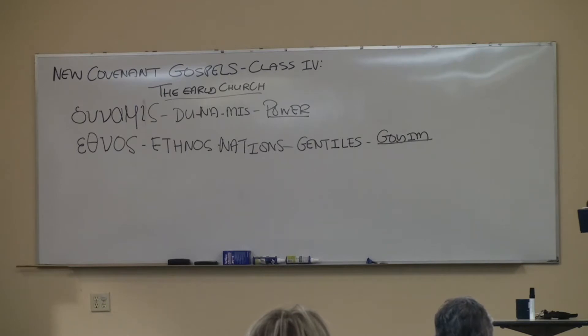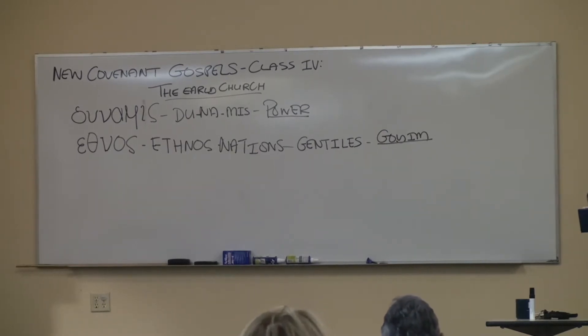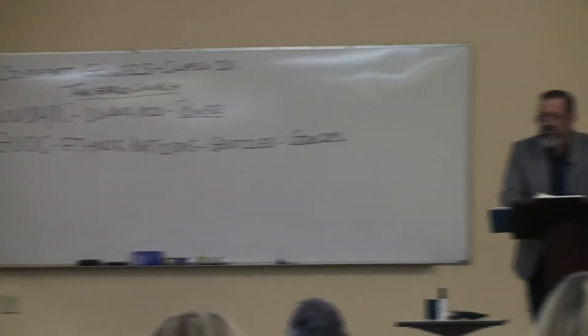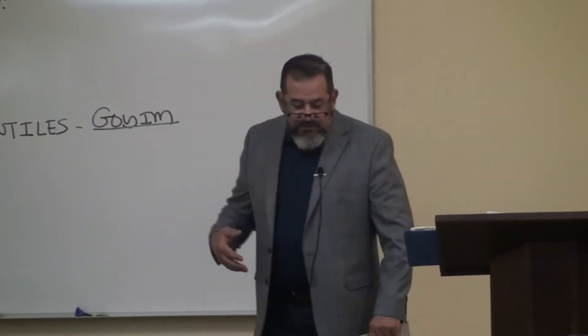The period we're looking at for the Book of Acts is 33 AD to about 60 AD — about 27 years of duration. We're going to consider the Book of Acts in three categories, or three sections.